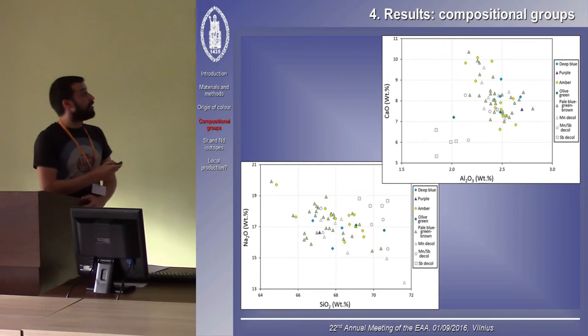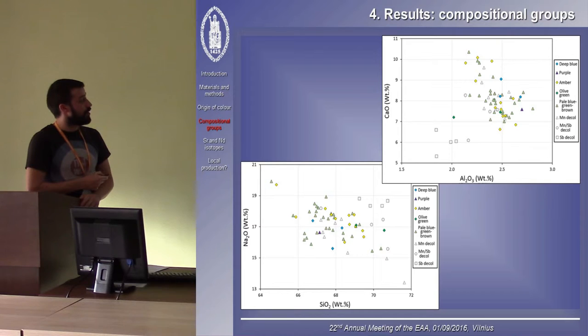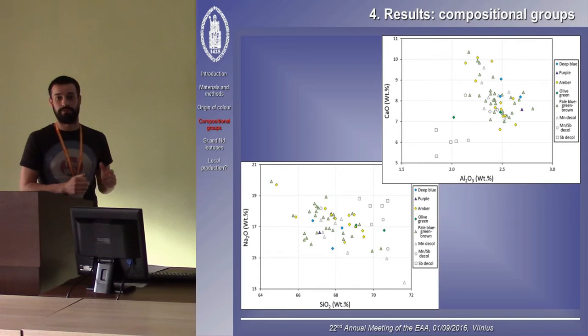The other glasses, the manganese decolored, pale colored, and strongly colored glasses, cannot be distinguished further based on these elements. They appear to have, be it a little bit broad, but quite a similar base glass composition.